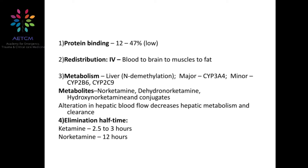Metabolism is mainly happening in the liver. CYP3A4, CYP2B6, and CYP2C9 are the enzymes which help the metabolism. The metabolites are norketamine, dehydronorketamine, hydroxynorketamine and its conjugates, all excreted via the kidney. When hepatic flow is deranged or decreased, ketamine metabolism may take a long time, so the dosage has to be adjusted accordingly.